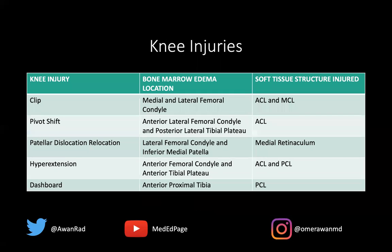There are multiple knee injuries that occur in the knee, and the important thing again is that bone marrow edema problems predict the soft tissue structure that's injured. So even though initially I didn't show you the ACL or the MCL, you should automatically know that the ACL and the MCL will be injured in a clip injury when you have marrow edema along the medial and lateral femoral condyle — that's a clip injury.